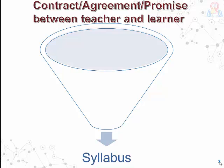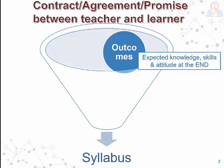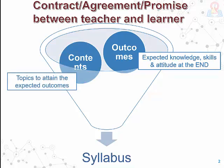Like a contractor in construction, teachers are wholly responsible for writing a quality syllabus. In syllabus writing we have three important components. The first one is the outcomes — statements describing the expected knowledge, skills and attitude at the end. The second important component is the contents, which are the topics needed to fulfill or obtain the expected outcomes described earlier.